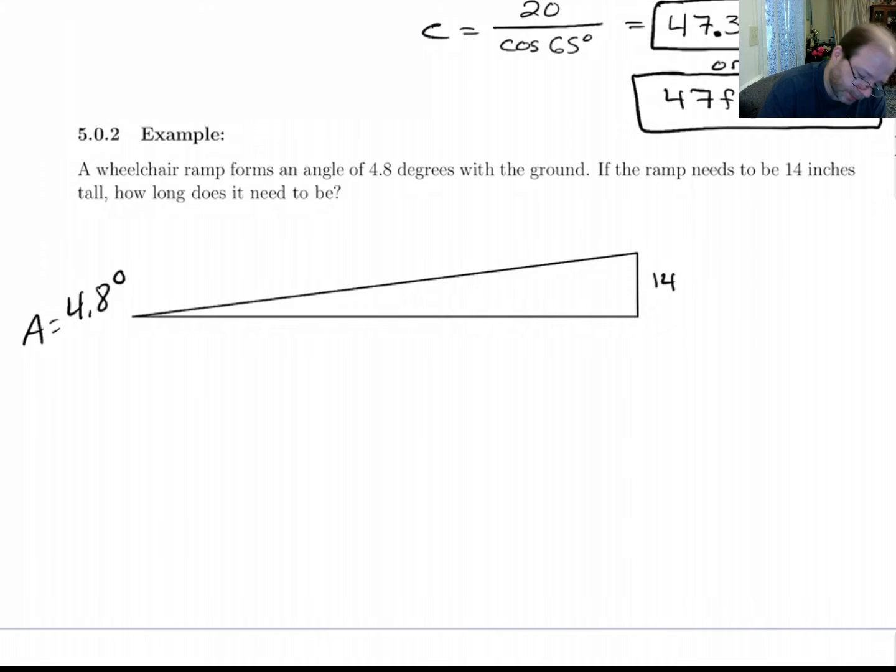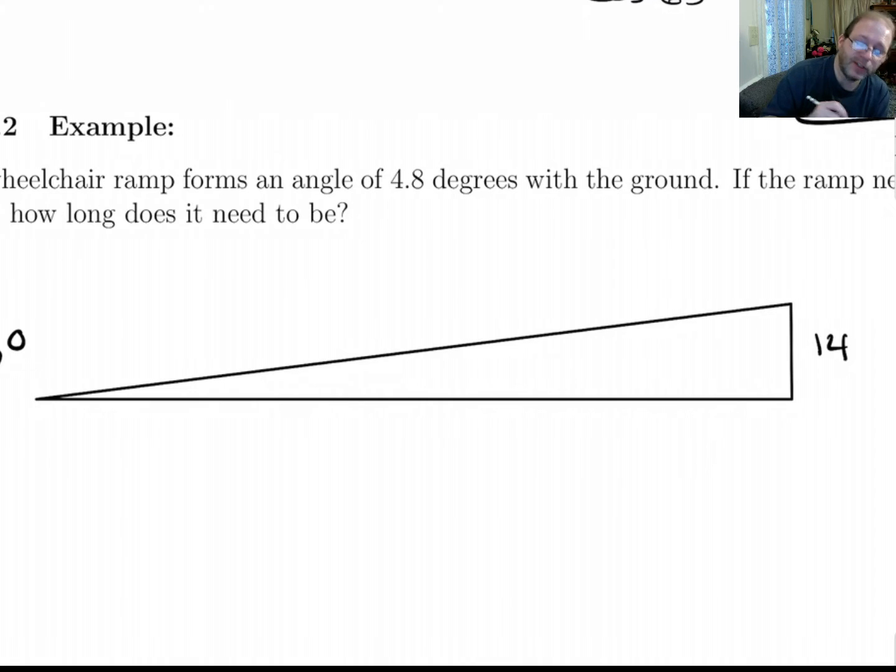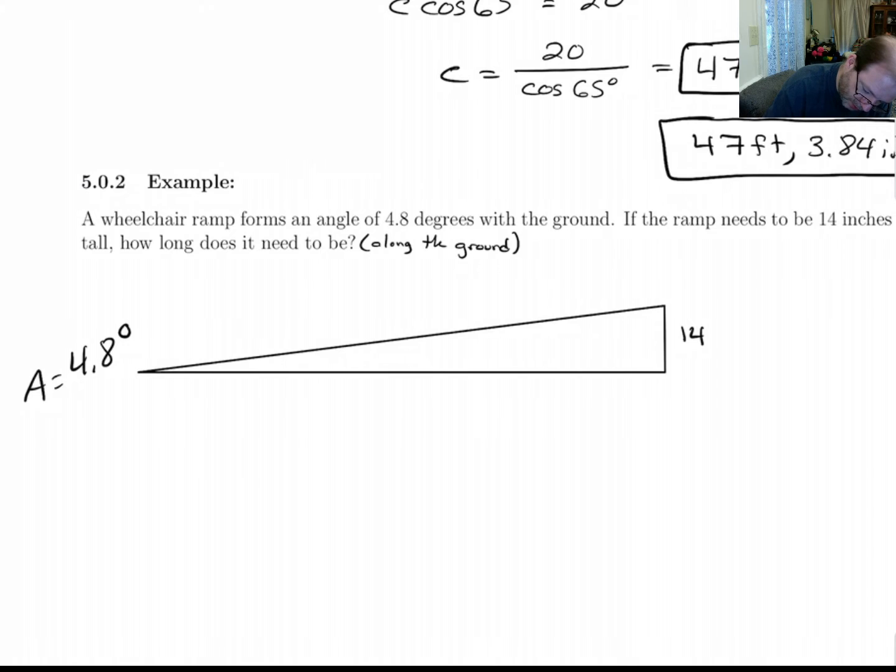And the question is not very specific. How long does it need to be? Well, I'm the teacher. I will make it specific. How long does it need to be along the ground? Alright. So let's call this B just for whatever reason. Well, I guess it's the right thing to call it if this is A. Then 14 would be little a and this would be B. But anyway, so we've got the angle down here, 4.8 degrees. We've got the opposite and the adjacent side. So we're going to use tangent here.